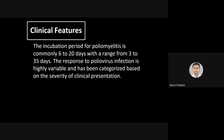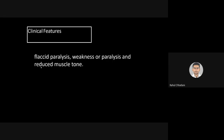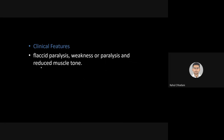Clinical features: the incubation period for poliomyelitis is commonly 6 to 20 days, with a range of 3 to 35 days. The response to poliovirus infection is highly variable and categorized based on severity of clinical presentation — mild, moderate, and severe. Clinical features specifically include flaccid paralysis, weakness or paralysis, and reduced muscle growth. Overall muscle tone decreases, motor control is lost, and there can also be weakness — that is paresis.